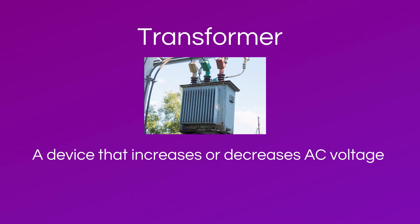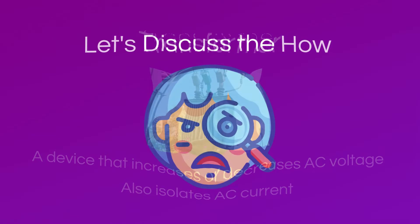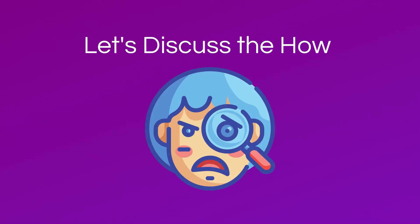What is a transformer? A transformer is a device that either increases or decreases alternating current or AC voltage in a circuit, or isolates the AC current from one circuit to another while keeping the same AC voltage from the first circuit. Before we talk about how to use them in a circuit, let's discuss how they work.